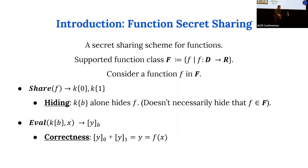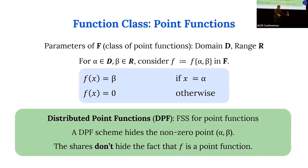A brief introduction to function secret sharing: it's a secret sharing scheme for functions. You can take a function and share it into two shares k0 and k1, which have a natural hiding property — if you see only one share, you don't learn anything about the function f. These shares can be evaluated: you take an element x in the function domain, evaluate the share at x, and get an additive share of the function output at x. So server zero and server one, evaluating their shares at the same point x, will get additive shares of the function output.